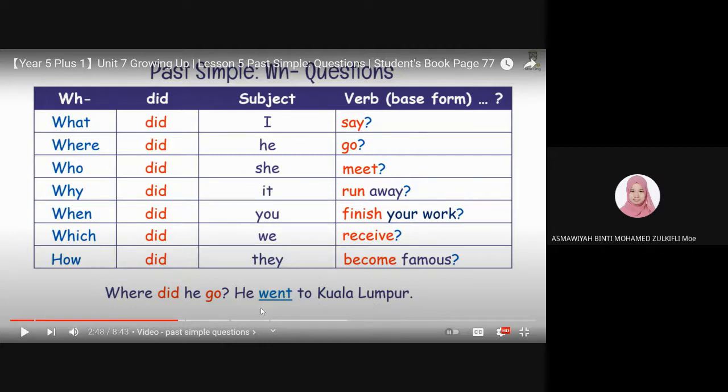The verb here and the verb here. But for go, dia after did, dia kena dalam base form. Ada where did he went? No. Where did he go?